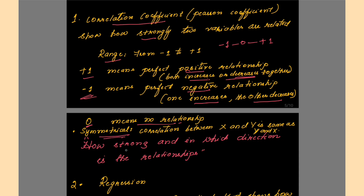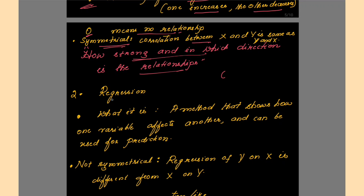You should know about the term 'symmetrical': correlation between x and y is the same as between y and x. Whether you are asked to find the correlation coefficient between x and y or between y and x, it means the same thing. Basically, what you need to check is how strong the relationship is and in which direction — that was about correlation.